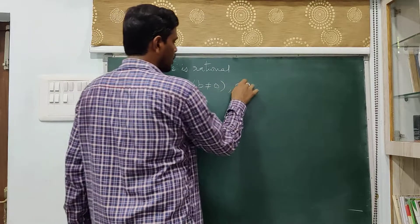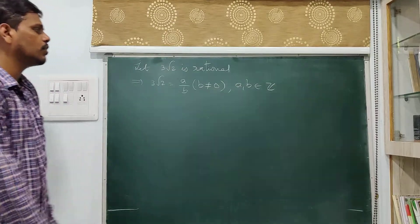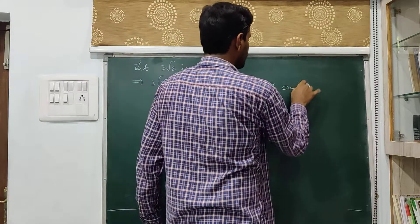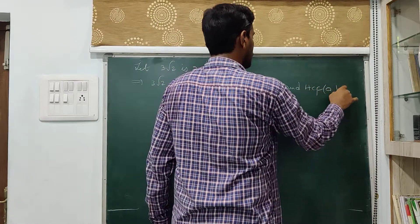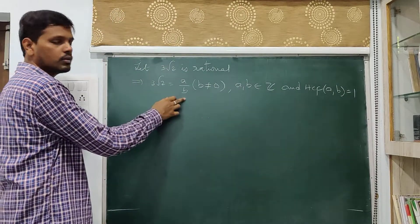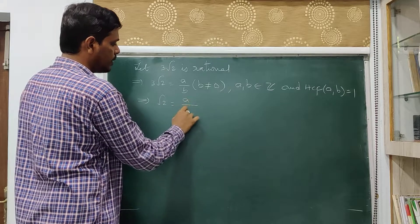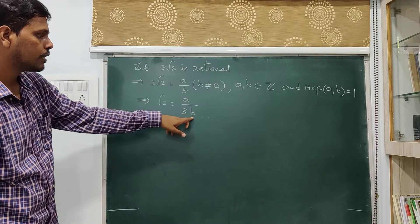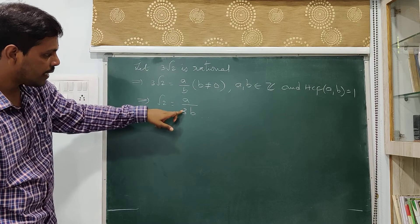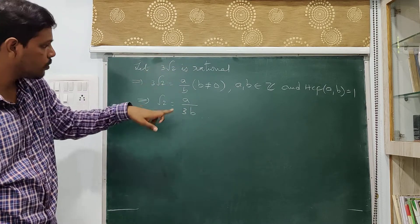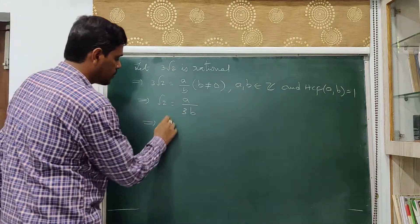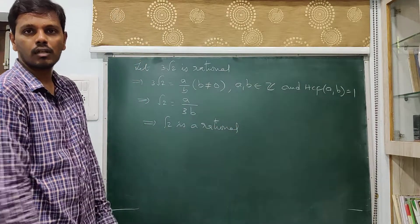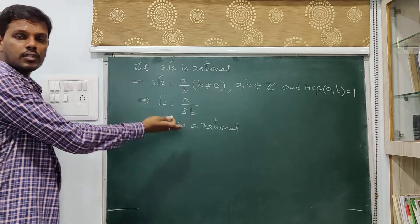We write 3√2 equals a by b. Now bring the 3 to the other side: root 2 equals a by 3b. Now, a is an integer, b is an integer, and 3 is an integer. The product of two integers is an integer, so this is integer divided by integer, which is a rational number. So root 2 is a rational number. But we have already proved that root 2 is irrational, so this is a contradiction.